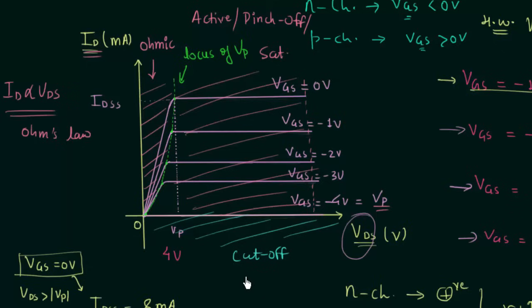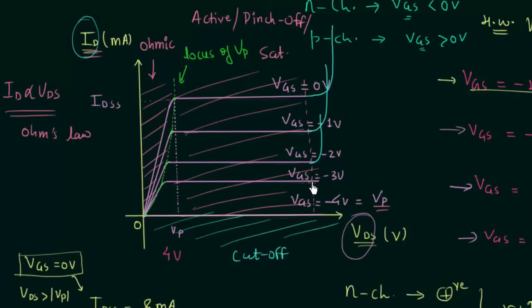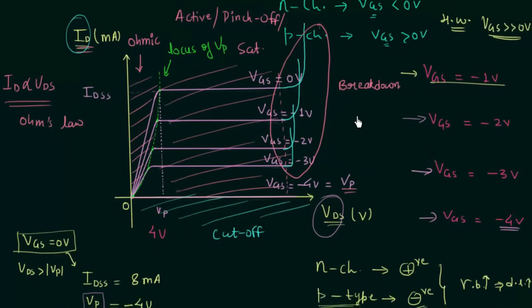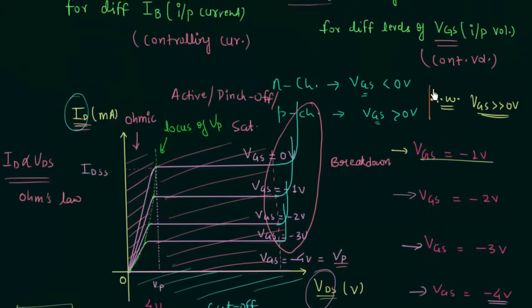If you go on increasing VDS further, like any semiconductor device, there will be breakdown. The drain current will increase drastically — this is the breakdown region, where a very high drain current flows through the device. That is all for this lecture. Don't forget to solve the homework problem: tell me the effect of making VGS more and more positive on N-channel JFET, and post your answer in the comment section.